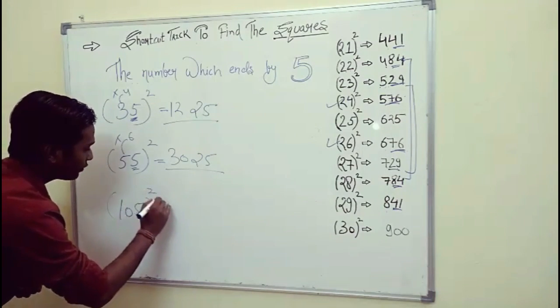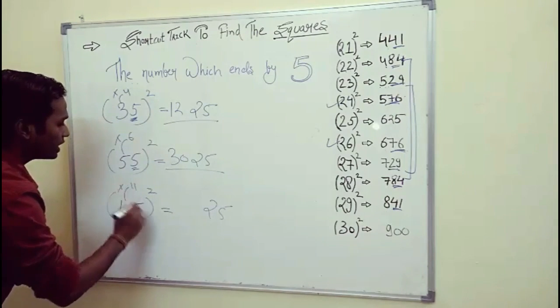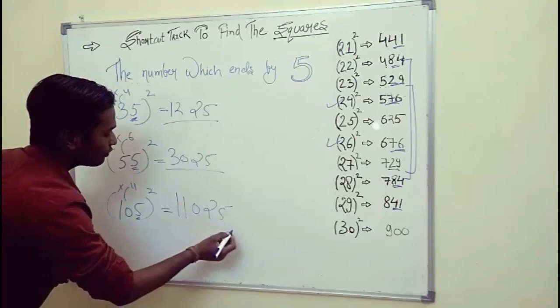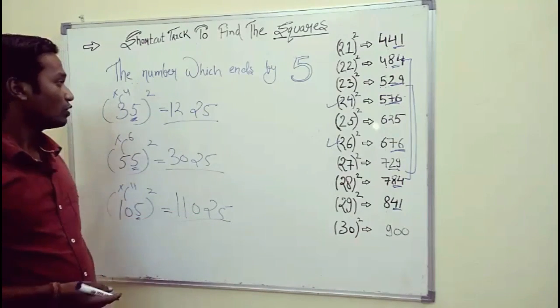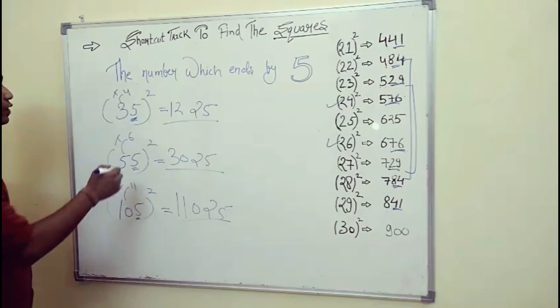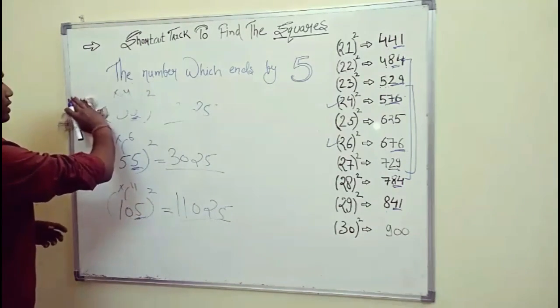For 105 squared, you have 25 and 10 multiplied by its consecutive number 11 gives 110, so the answer is 11,025. This pattern follows for all numbers which end in 5.